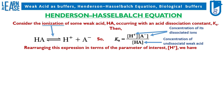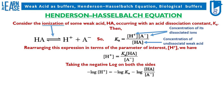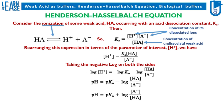Rearranging this expression in terms of the concentration of H+ ions, and then multiplying the negative log on both sides, and replacing minus log base 10 of H+ ion concentration, we get the final equation: pH equals pKa plus log of the ratio of the dissociated negative ion concentration to the concentration of undissociated weak acid. This is known as the Henderson-Hasselbalch equation.